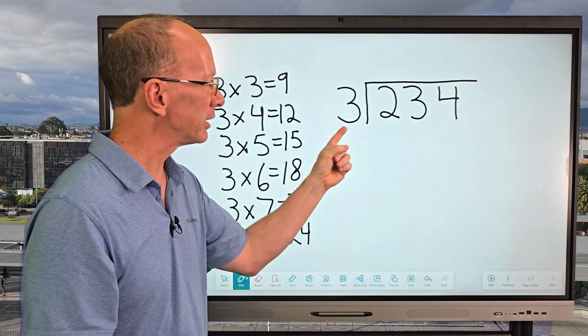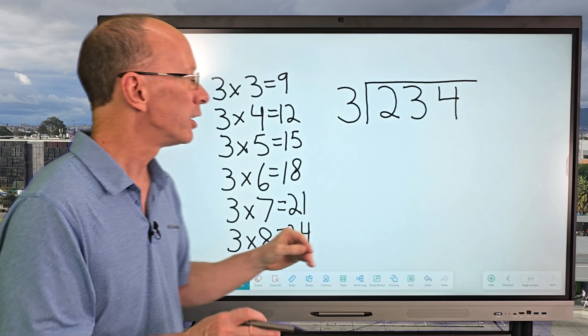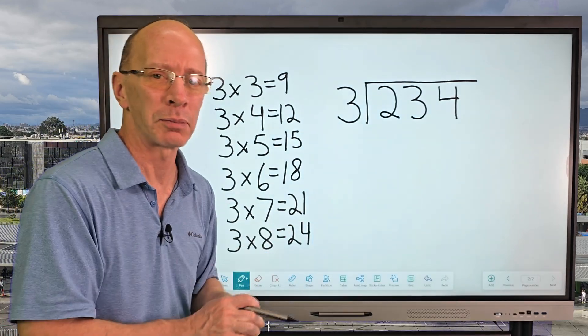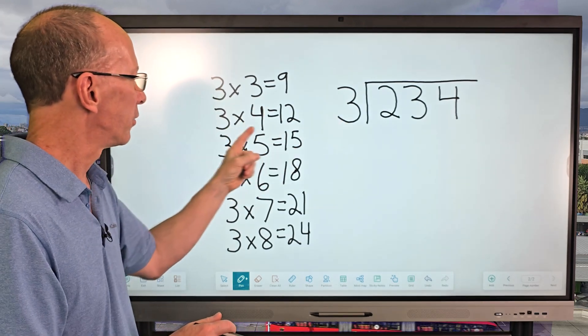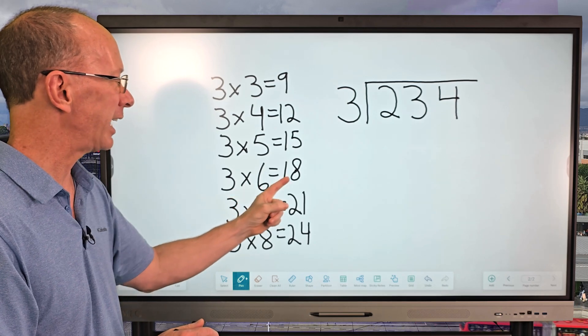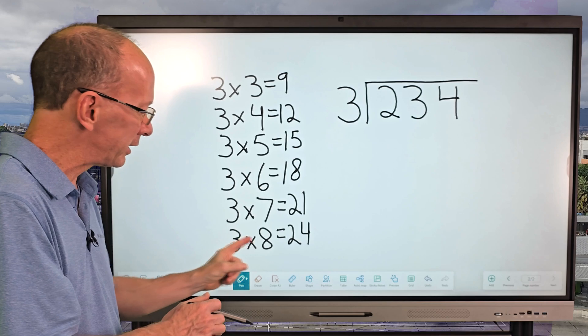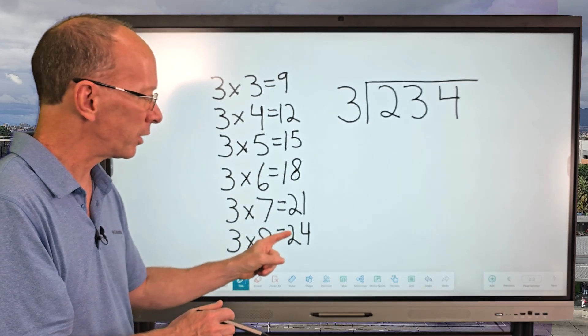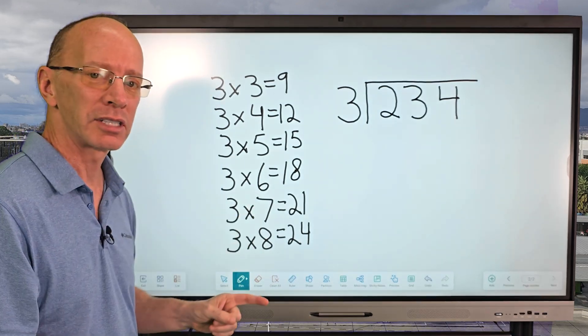So how many times can I put 3 into 23? You don't want to go over. You want to get as close to 23 as possible. So let's take a look here. 3×3=9, I can go definitely higher. 3×4=12, 3×5=15, 3×6=18, 3×7=21. And if I were to use 3×8=24, that 24 is bigger than 23. That's not going to work. So I'm going to use 3×7.